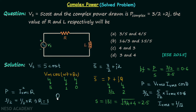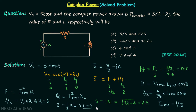To find inductance L, we use the reactive power formula: Q = Irms² × XL, where XL = ωL and ω = 1, so XL = L. With Q = 2 and Irms² = 1/2, we get 2 = (1/2) × L, therefore inductance L = 4. Option D is the correct answer.